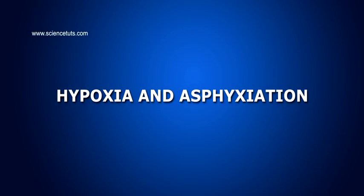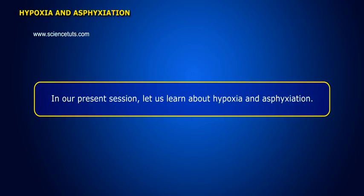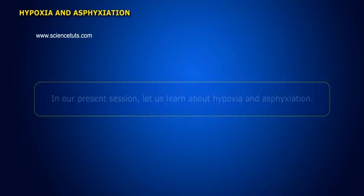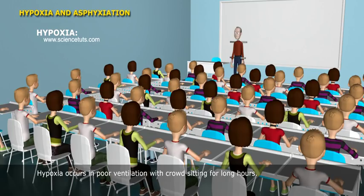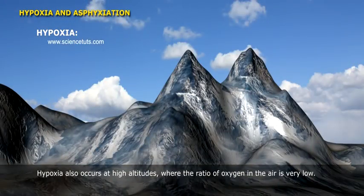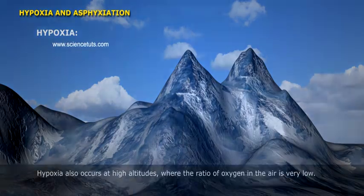Hypoxia and Asphyxiation. In our present session, let us learn about hypoxia and asphyxiation. Hypoxia is the deficiency of oxygen reaching the tissues. Hypoxia occurs in poor ventilation with crowds sitting for long hours. It also occurs at high altitudes where the ratio of oxygen in the air is very low.